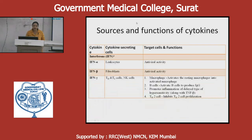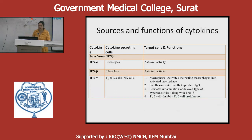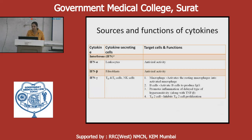Interferons are important cytokines. Interferon alpha is secreted by leukocytes and has antiviral activity. Interferon beta is secreted by fibroblasts and also has antiviral activity. Interferon gamma is secreted by lymphocytes including T helper cells, cytotoxic T cells, and natural killer cells. It acts on macrophages and B cells, promotes inflammation, and inhibits T helper 2 cell proliferation. The origin of each interferon is important to know — which interferon is secreted by which cells.